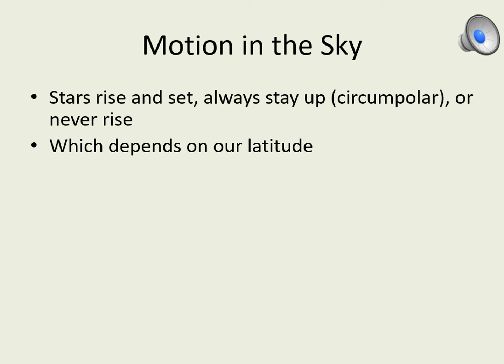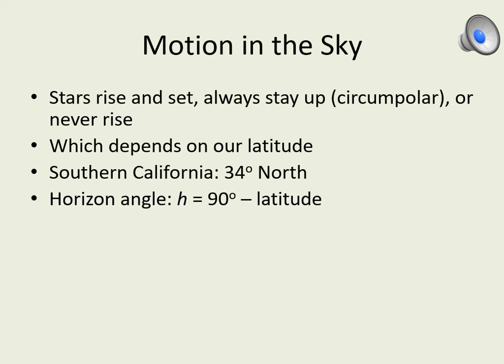To answer this question, we first have to know what our latitude is on the Earth. Here in Southern California, the latitude is 34 degrees north. The next number we need is called the horizon angle, which is simply 90 degrees minus the latitude. Since our latitude is 34 degrees north, the horizon angle is 90 minus 34, which gives us 56 degrees.